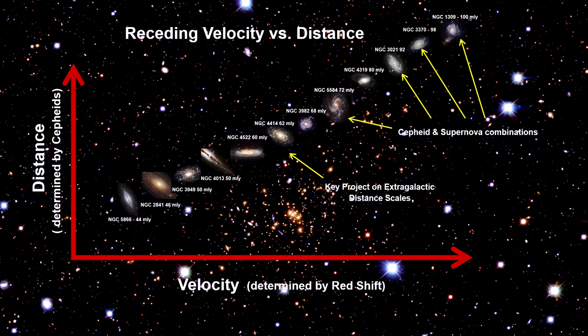His Hubble law says that the further away a galaxy is, the faster it is receding away from us. The relationship is linear, a straight line. So the equation is simple. The receding velocity of a galaxy is equal to its distance times a constant, now called the Hubble constant.